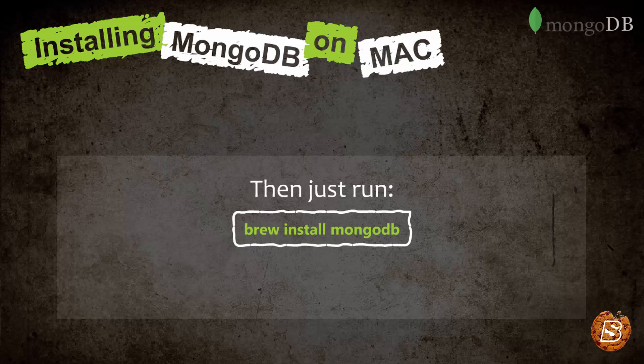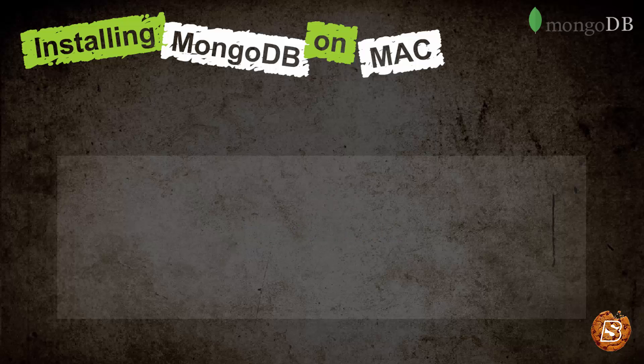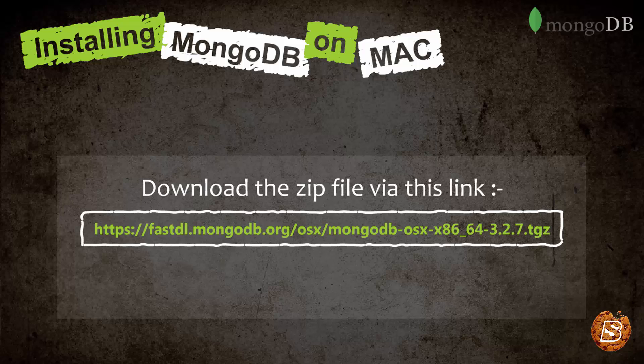But if you prefer installing it manually, in that case you first of all need to visit this website mongodb.com. Then on the download link select OSX, and here you will be selecting the 64-bit version and click on download TGZ. It's going to download this version.